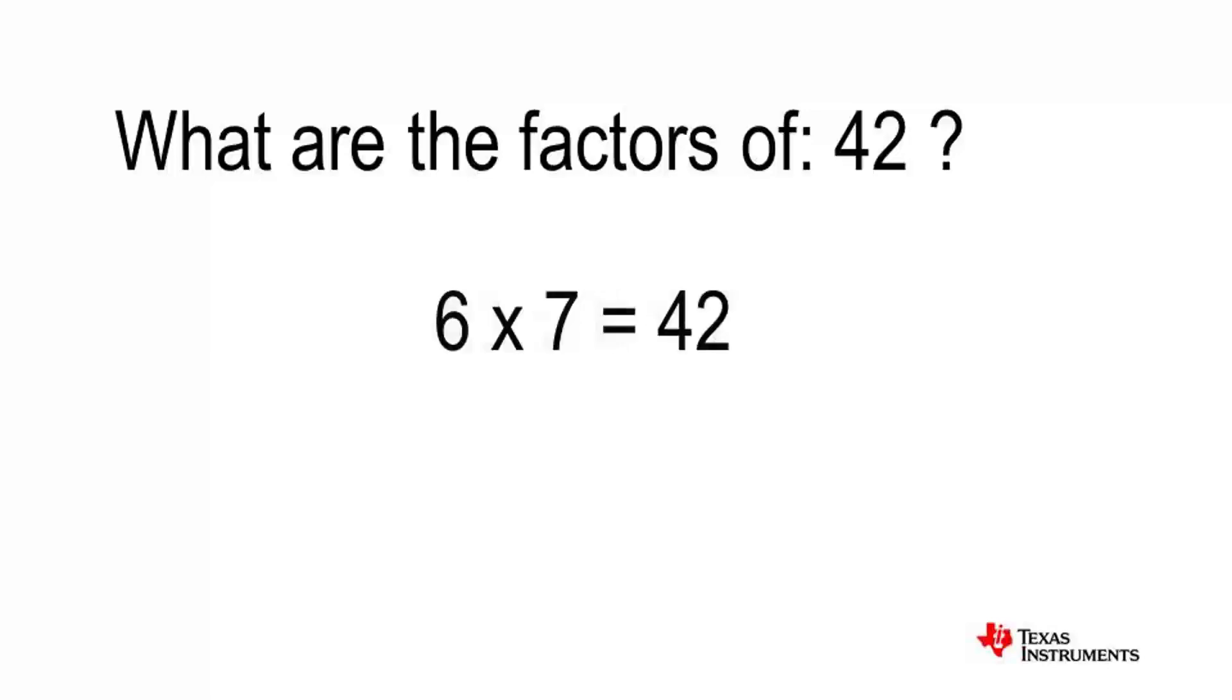We can also rewrite our calculation as 6 times 7 equals 42. In this case, we can also further factorise by identifying the factors of 6. Now we have completely factorised 42 by writing it as a product of its prime factors.